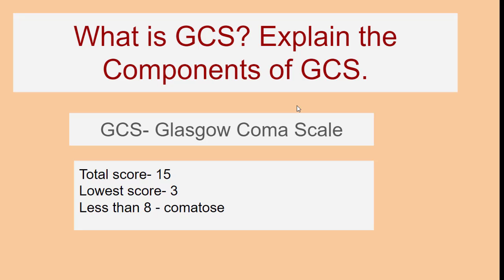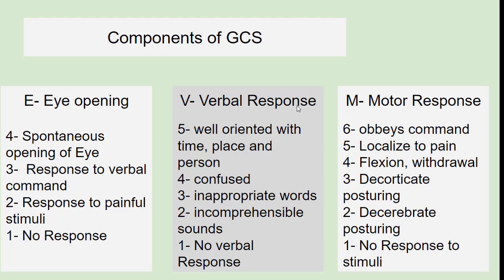What is GCS? Explain the components of GCS. GCS is the Glasgow Coma Scale. The total maximum score for GCS is 15 and the lowest score is 3. A score of less than 8 means comatose. Components of GCS include EVM: eye opening, verbal response, and motor response. The maximum score for eye opening is 4, verbal response is 5, and motor response is 6. For eye opening: spontaneous eye opening scores 4, response to verbal command scores 3, response to painful stimuli scores 2, and no response scores 1.